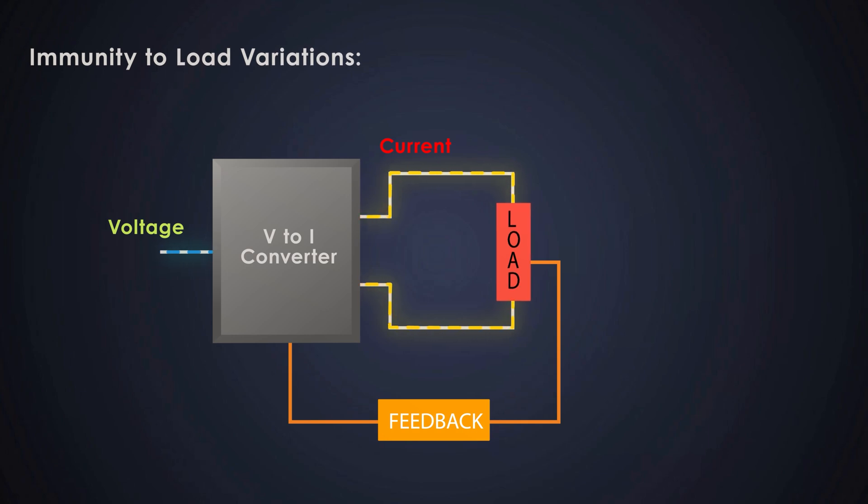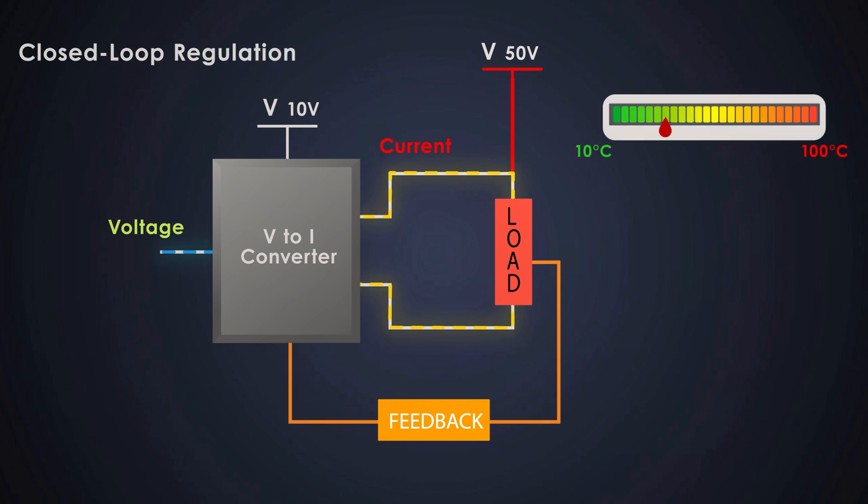The output current remains constant even if the load impedance fluctuates. Especially in low side configurations, the load voltage can exceed the Op-Amp's supply, useful in high voltage applications. The Op-Amp continuously corrects the drive signal to the BJT, ensuring stable operation across temperature and supply variations.